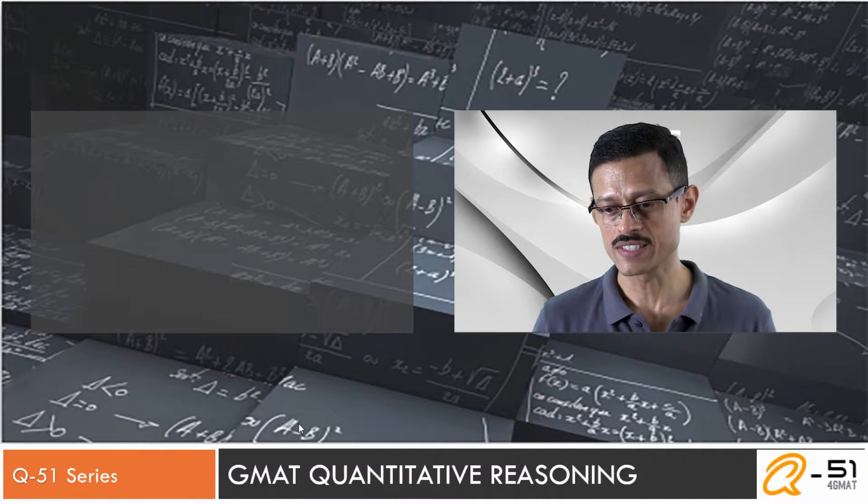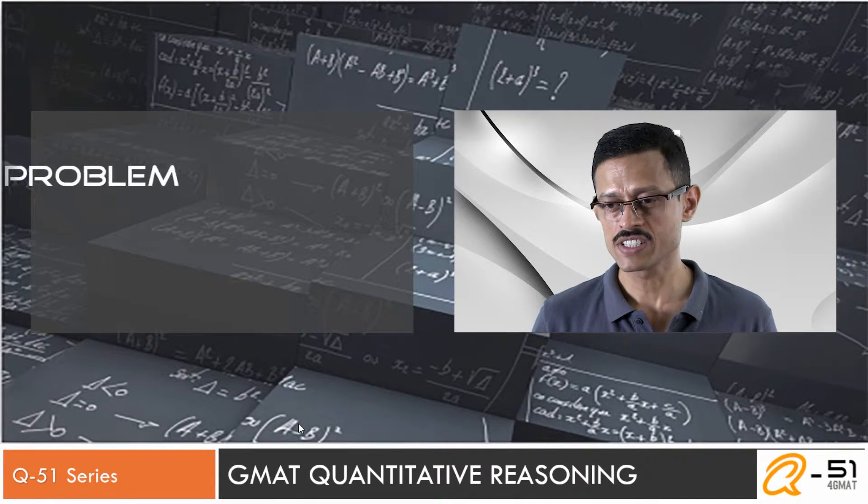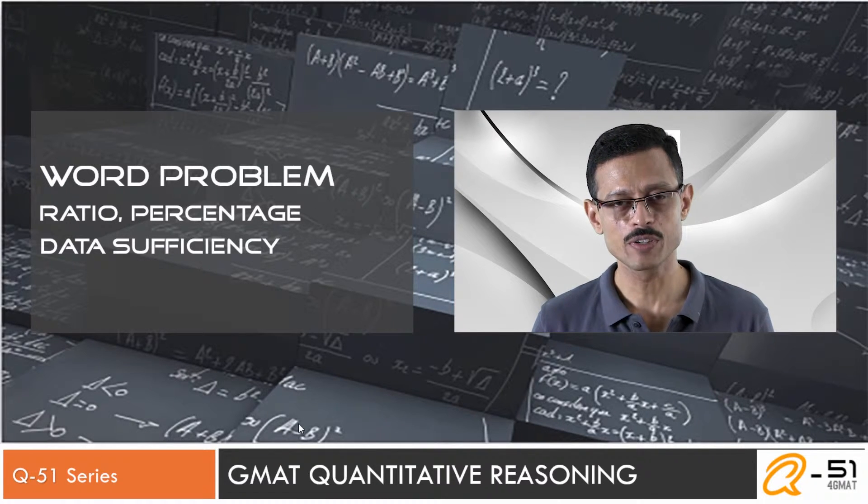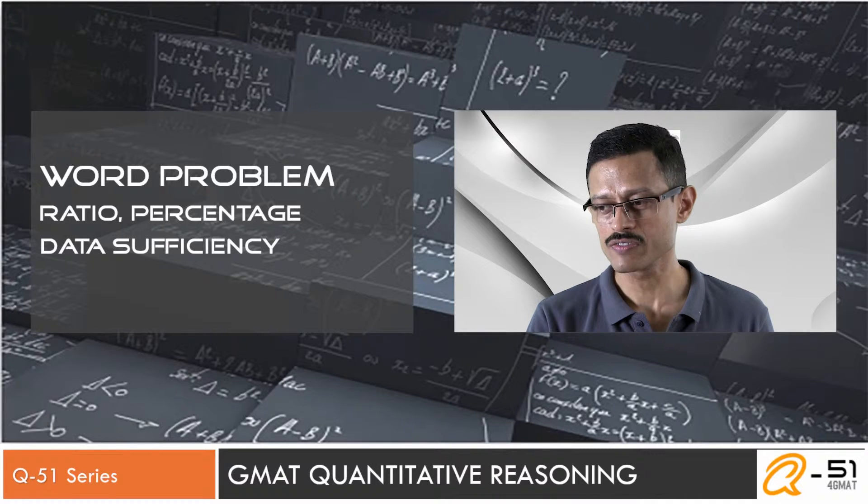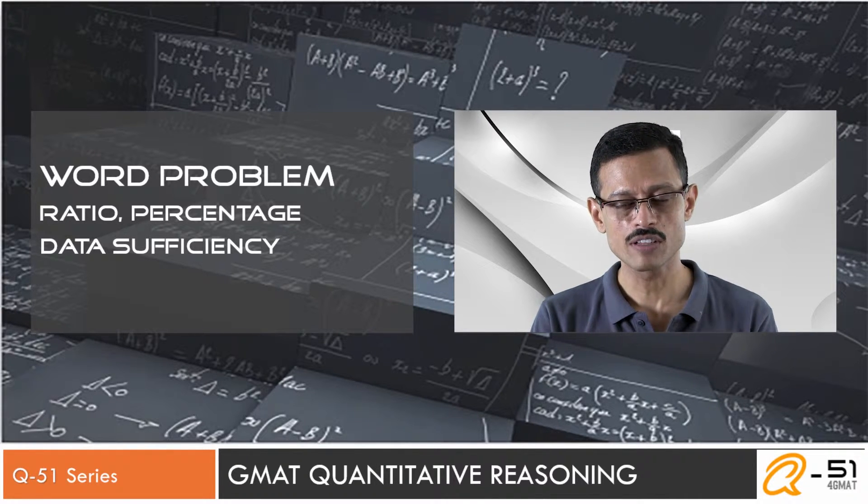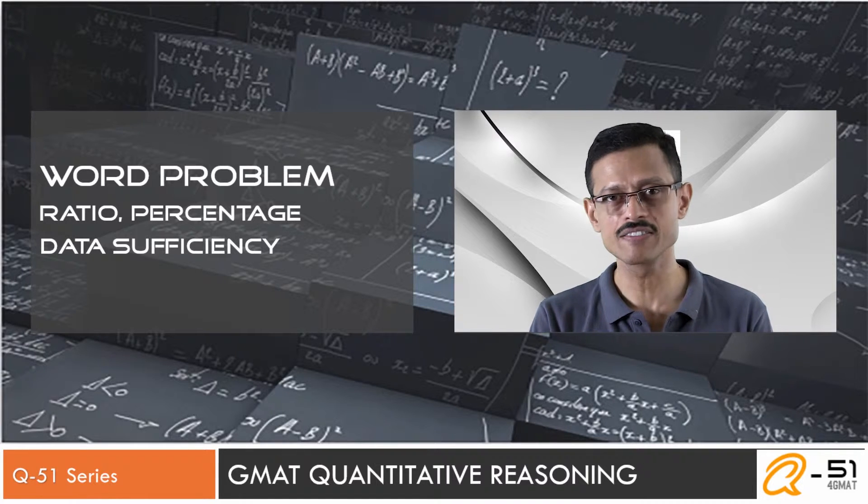This question is part of the Q51 series. It's a data sufficiency question, a word problem covering concepts of ratio and percentages. This is actually a relatively easy question.